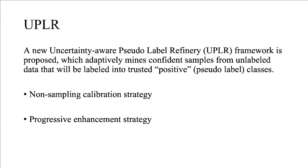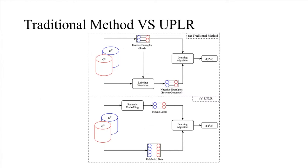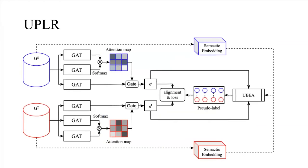Traditional methods versus our approach: Traditional methods need seeds; our proposed UPLR doesn't need seeds. Traditional methods need negative sampling; UPLR doesn't need sampling. Our proposed model builds a Gate Graph Attention Network and further develops a non-sampling calibration strategy combined with a gradual enhancement strategy to optimize the final knowledge graph embedding. These figures show the framework of our model, and it will be described in more detail below.